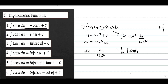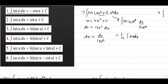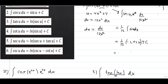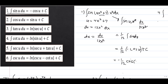We know the integral of sine u du equals negative cosine u plus C. Therefore we have 1/12 times negative cosine u plus C. Substituting back the equivalent of u, the final answer is negative 1/12 times cosine(4x³ + 7) plus C.